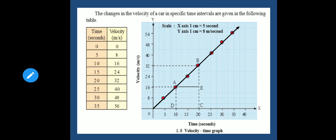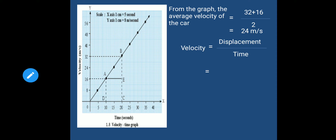Now, from the graph, we can determine the distance covered by the car between the 10th and 22nd second. As we did in the case of the train in the previous video, we already solved such a type of example. In the same manner, we have to find out the distance covered by the car between the 10th and 22nd second.